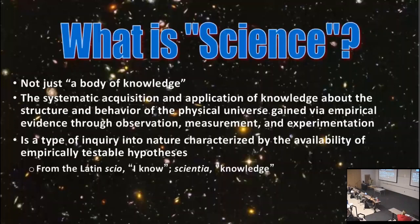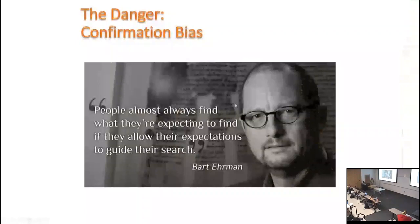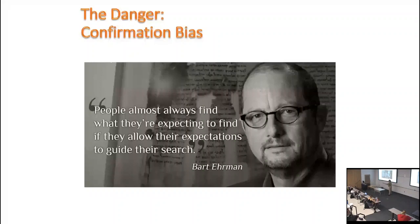When we talk about natural sciences and physical sciences, this is what we're dealing with. Why do we need science? Why can't we just have knowledge the way it is? Because we face a real danger called confirmation bias. This is not a scientist in the context I was using it — this is a theologian, Bart Ehrman, outside the realm of natural sciences, but still spot-on. It's human nature to look for stuff consistent with your previously held beliefs and ignore stuff that contradicts them. As he says, people almost always find what they're expecting to find if they allow their expectations to guide their search.